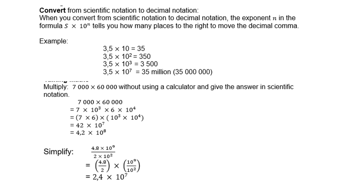Example: 3.5 times 10 — there's only one 10, so it's 10 to the power of 1, and the comma only moves 1 place, giving 35. With 10 to the power of 2, the comma must move twice, so I need to add a 0 to get 350. If it's 10 to the power of 3, the comma must move 3 times, so I add two more zeros to give 3,500. And if the power is 7, I get 35 million.